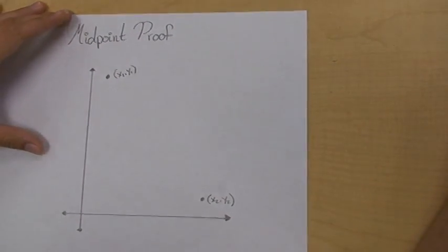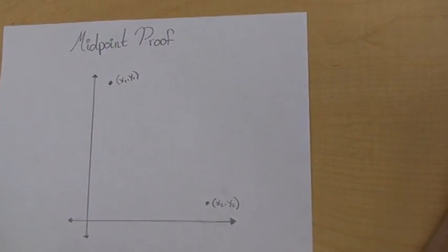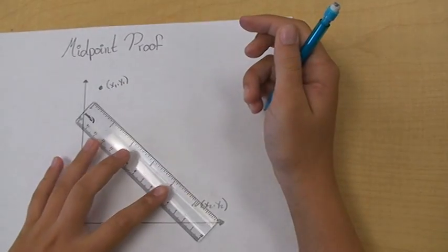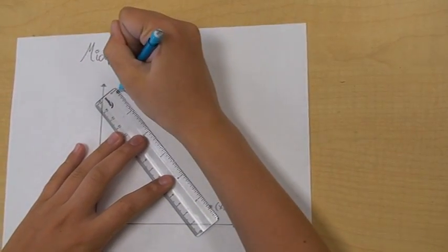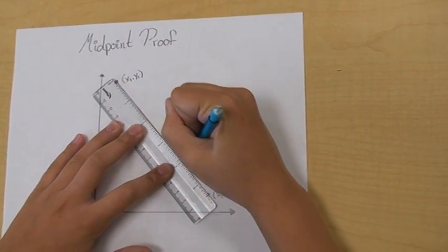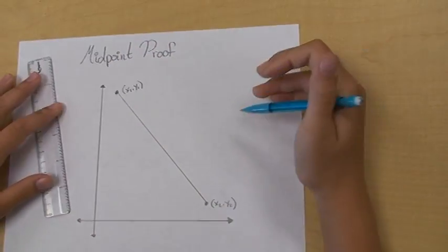We then want to represent the line connecting the two points, because we're trying to find the midpoint between two points in general.